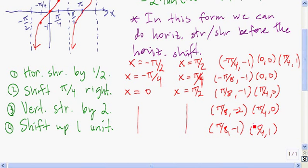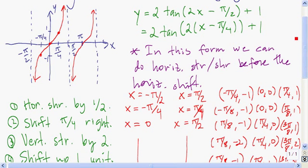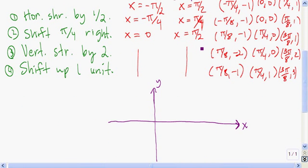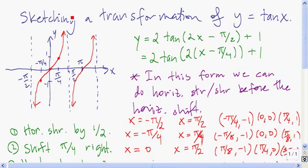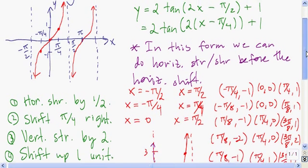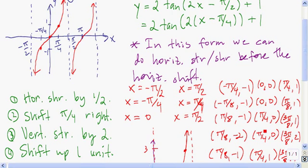For the point 0, 0, you should have gotten pi over 4, 1. For the point pi over 4, 1, you should have gotten 3 pi over 8, 3. Now we're ready to plot one cycle of this tangent function. We have vertical asymptotes at x equals 0 and x equals pi over 2, and we plot the points pi over 8, negative 1; pi over 4, 1; and 3 pi over 8, 3. I had to extend the graph because of that 3 pi over 8, 3 point. Think of it as a stretched-out tangent graph. That's one cycle.